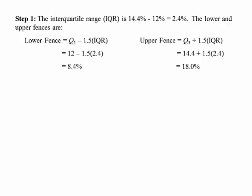The interquartile range, IQR, is 14.4 minus 12 percent, Q3 minus Q1, which is 2.4 percent. That is going to be the length of our rectangle, of our box plot.